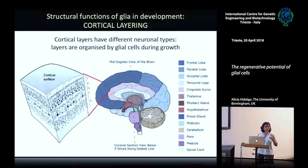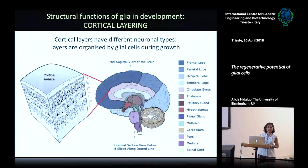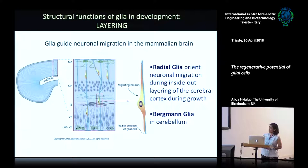One of the functions of glia in development is in the formation of the brain — they have structural functions. Different kinds of glia help organize the nervous system and brain during development. This is an example from the mammalian brain. The cortex is a layered structure, and so is the cerebellum. These layers have very distinct types of neurons that help organize the inputs and outputs to the brain, organizing the circuits. This layering, which is so critical for neuronal function, is organized by glial cells.